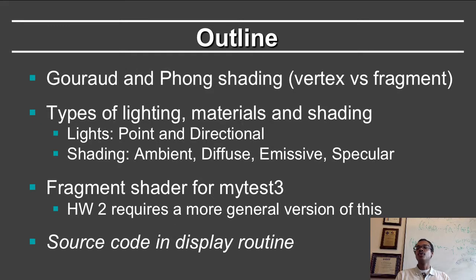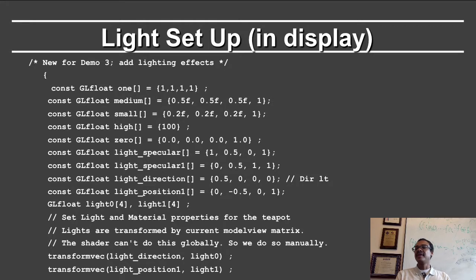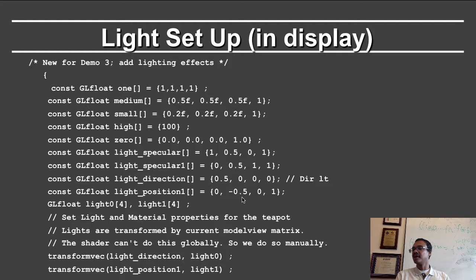We will now talk about the source code in the display routine — specifically the light setup. It involves a whole bunch of parameters corresponding to the lighting setup we will use. The value 1 is white: RGB is (1, 1, 1) with alpha 1. We define medium and small values, and high for the shininess. Light specular is red with some green tinge; light specular 1 has green and bluish tinge. For the directional light, the direction is x = 0.5. For the positional light, we define the positional light coordinates. We then transform the light direction and position to get light 0 and light 1 by applying the current model view matrix.